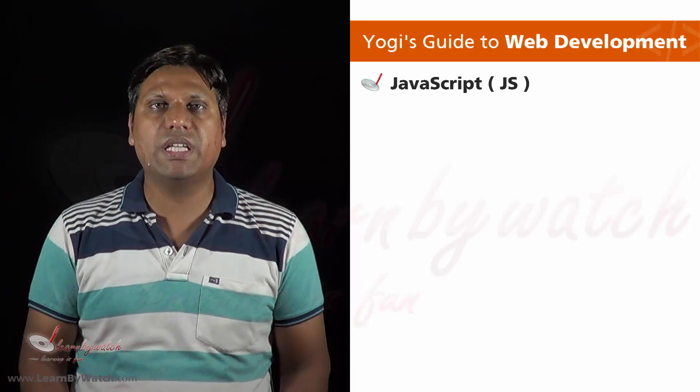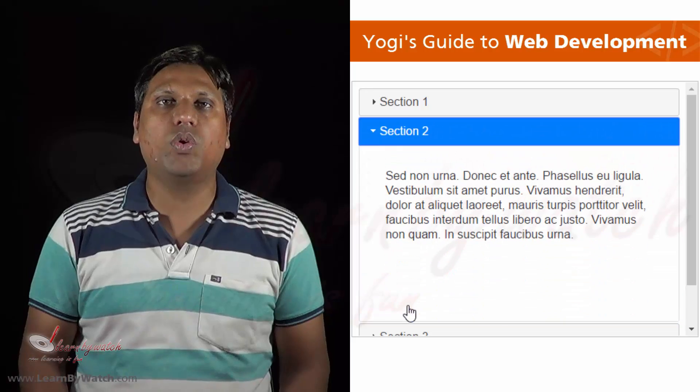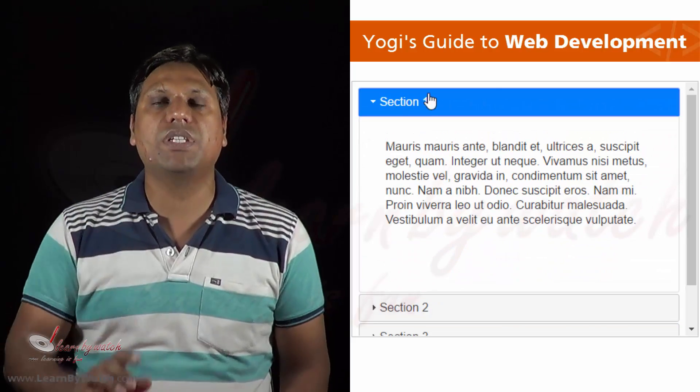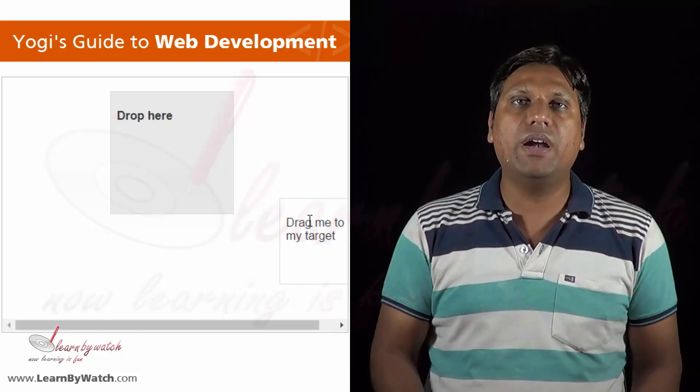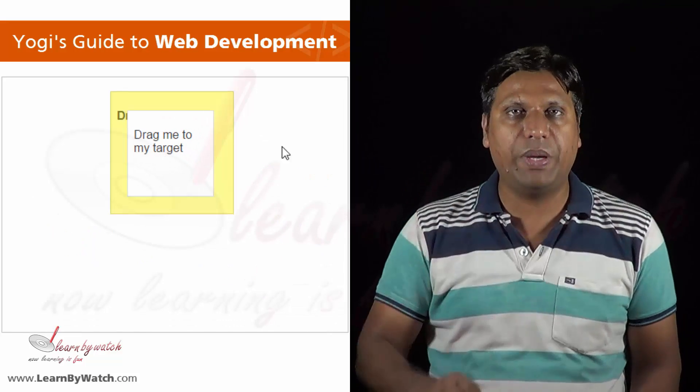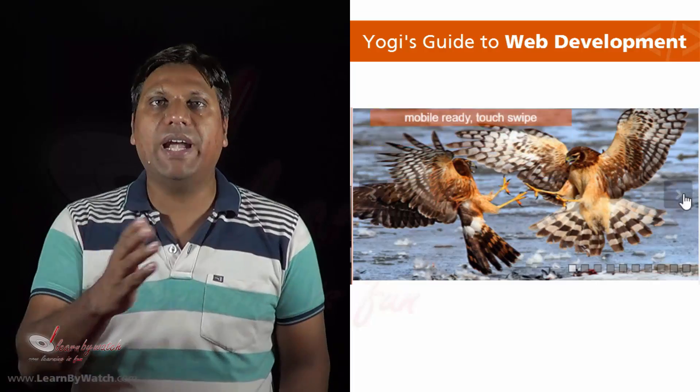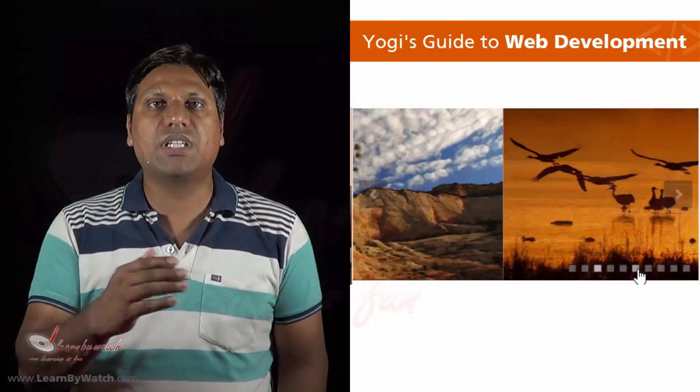But if you want to add some interactivity on a web page, you can't do this with HTML and CSS only. For this, you need to learn one more programming language known as JavaScript, or simply JS. With the help of JavaScript, you will be able to add interactivity — for example, if you want someone to click on a text to reveal information behind it, or add a draggable object, or an image slideshow where images come and go one by one. This interactivity can be added with the help of JavaScript only.